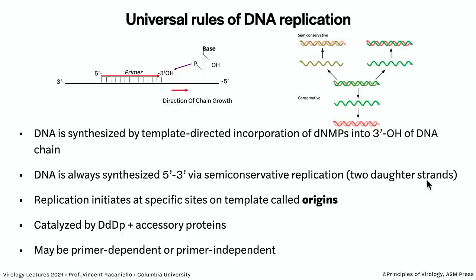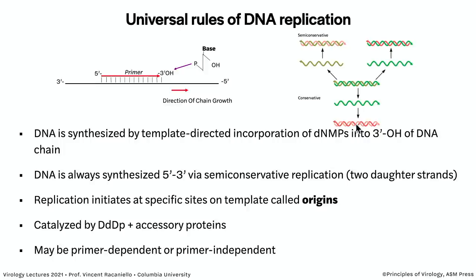It is called semi-conservative replication because we make two daughter strands. Here is a diagram of semi-conservative and conservative replication. Semi-conservative is when you take both strands and copy them both — very straightforward. Conservative, as you might think, is when only one strand is copied, and this is not what we're talking about today.